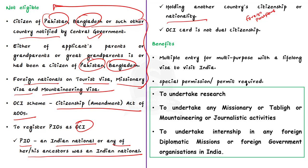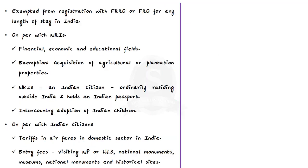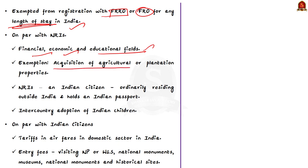Benefits enjoyed by OCI card holders: firstly, they can enjoy multiple entry with lifelong visa to visit India; however, for research work in India and certain other activities they require special permission. Secondly, they are exempted from registration with the Foreigners Regional Registration Officer or Foreigners Registration Officer for any length of stay in India. Thirdly, they are on par with NRIs in financial, economic, and educational fields, with the exception of acquisition of agricultural or plantation properties.